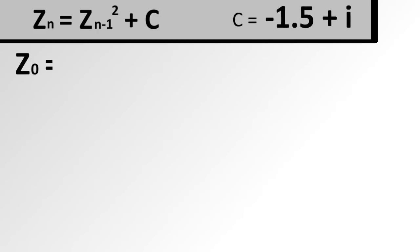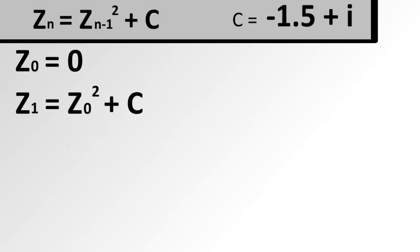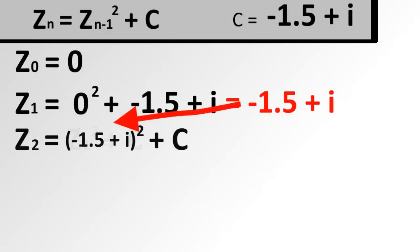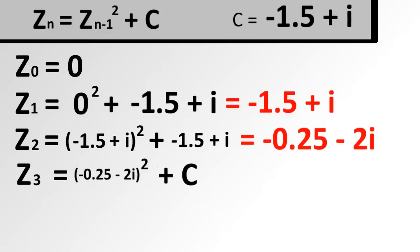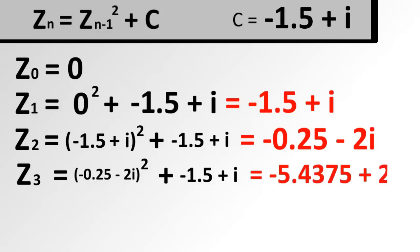Z sub 0 equals 0. Z sub 1 equals 0 squared plus c, which is our number. Z sub 2 equals that squared plus our number. That's negative 0.25 minus 2i. Z sub 3 equals that squared plus our number, which equals negative 5.4375 plus 2i.